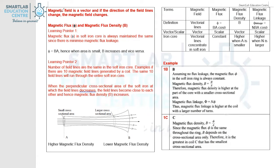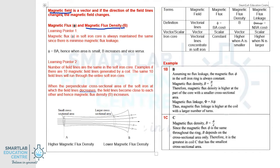Now that we have learned magnetic flux and magnetic flux linkage, let's take a look at two more terms commonly used in electromagnetism: magnetic field and magnetic flux density. Magnetic field comprises vectorial lines, and when the direction of the field lines changes, the magnetic field changes. Magnetic flux density quantifies the strength of the magnetic field. When the magnet is strong, its magnetic flux density in the vicinity will be high, and it will have a high density of magnetic field lines.